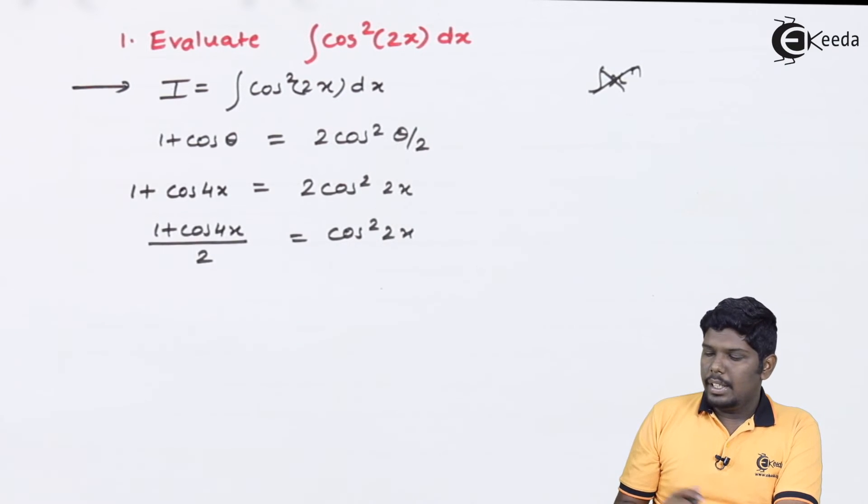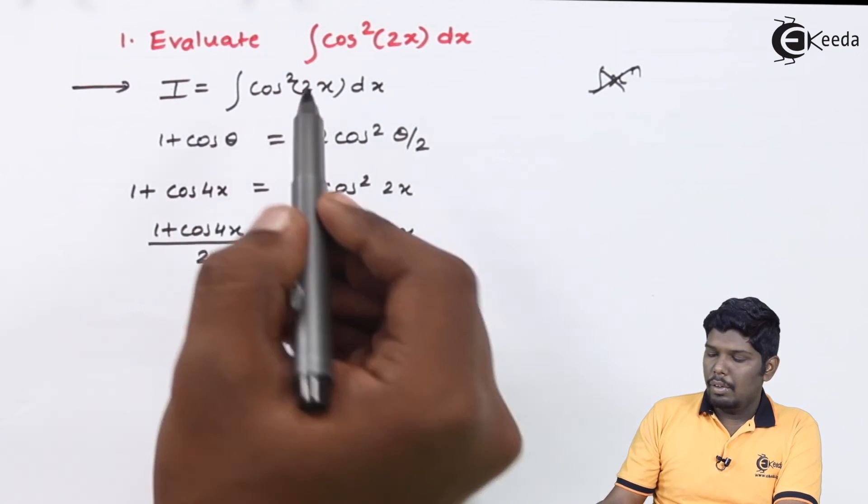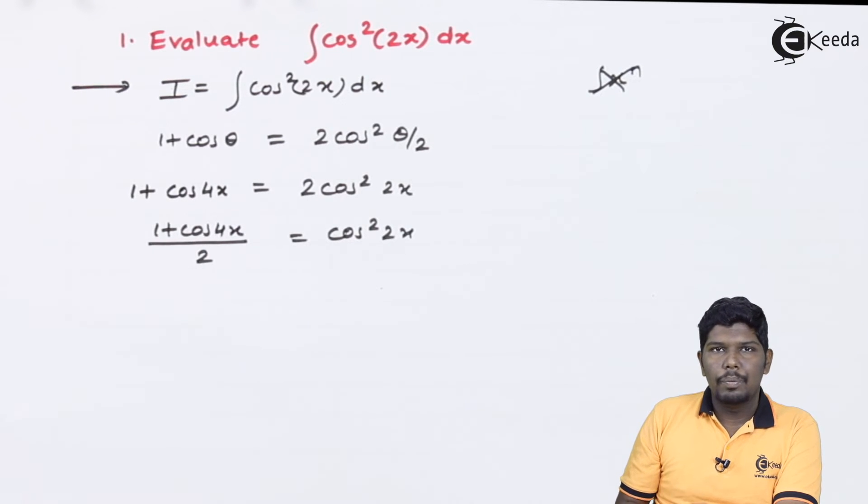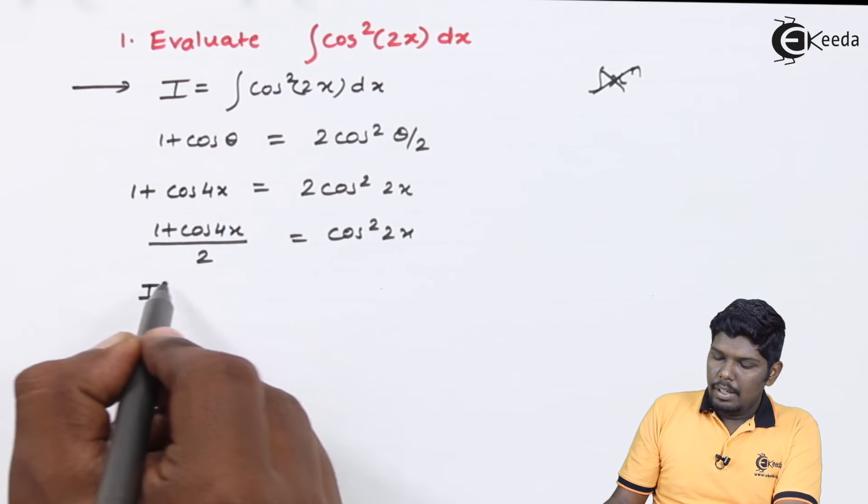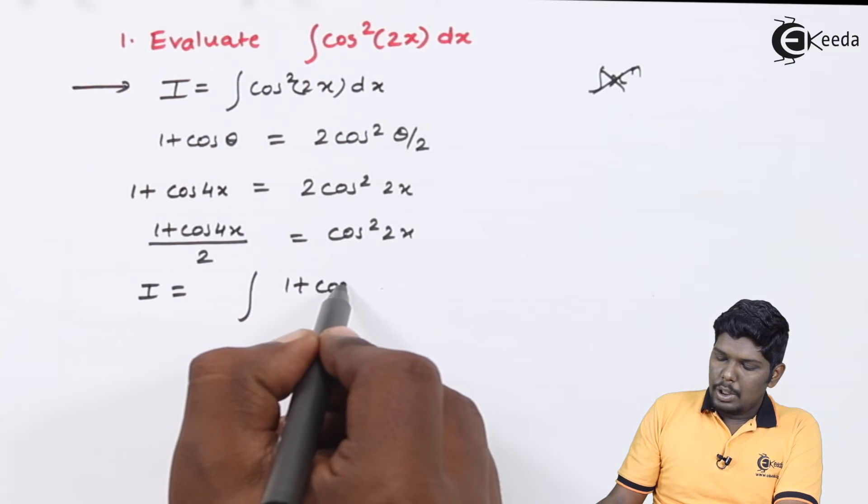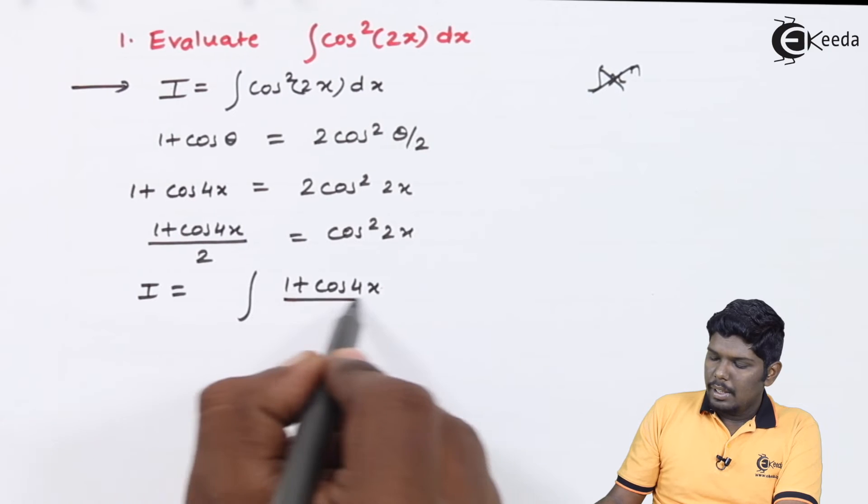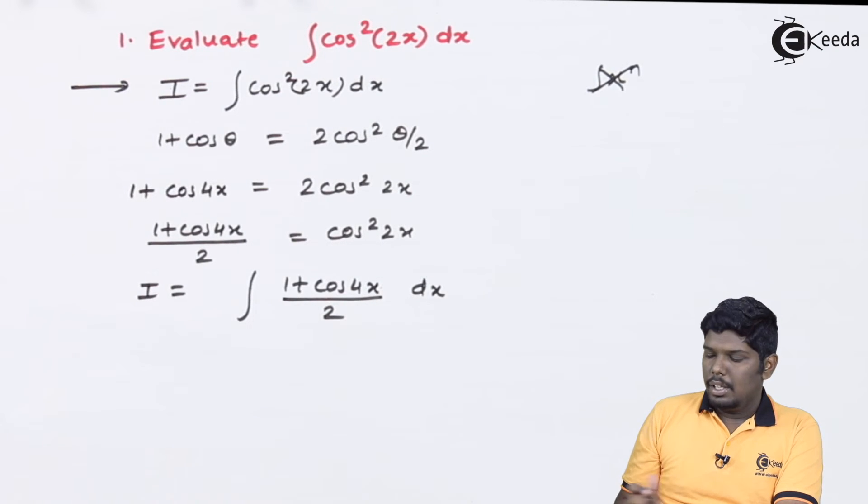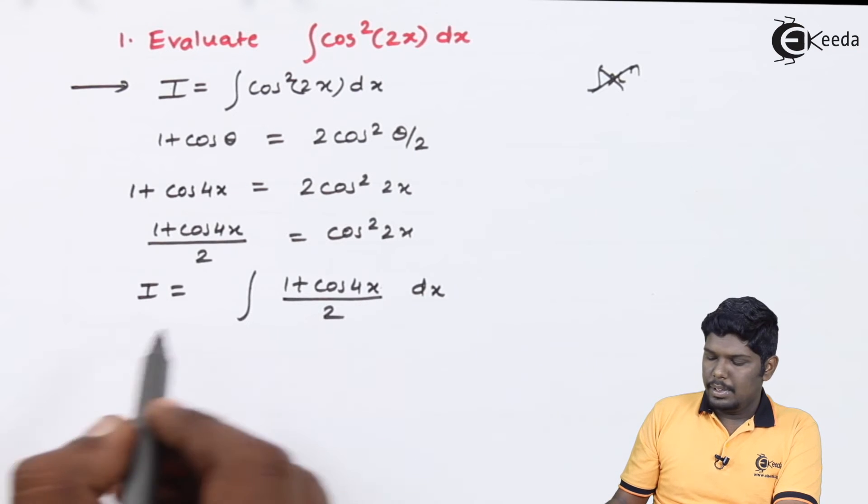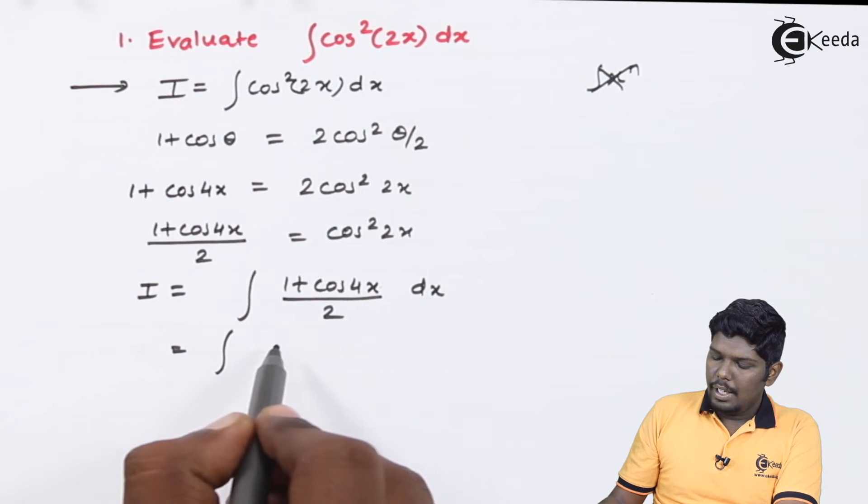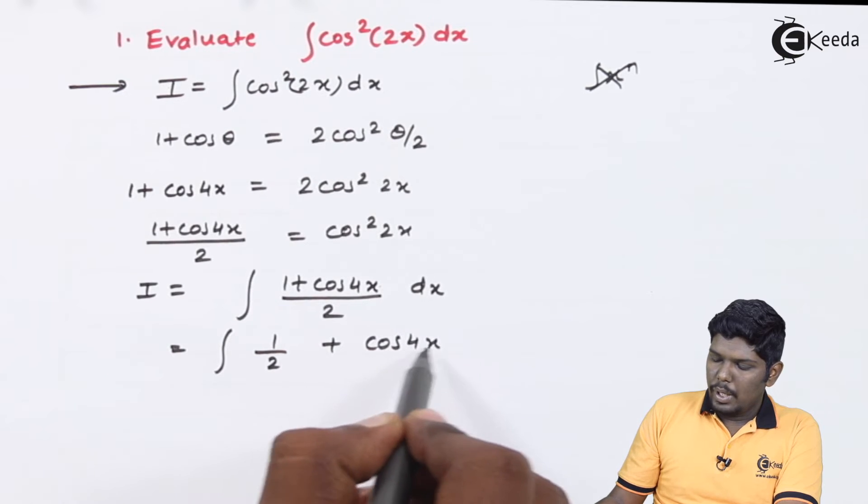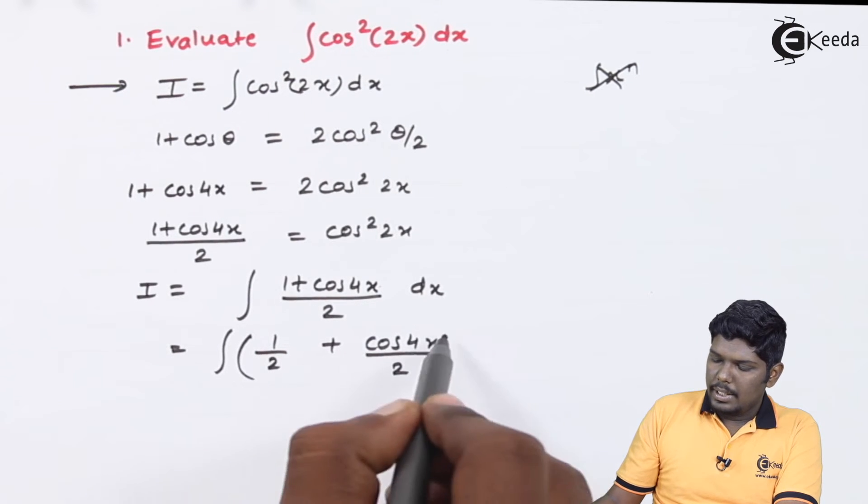Therefore, instead of integrating this function, I will substitute cos square 2x as 1 plus cos 4x upon 2. I will be integral 1 plus cos 4x upon 2 dx. Here, you can separate 2 to both the terms. This will give you integral 1 by 2 plus cos 4x upon 2 dx.